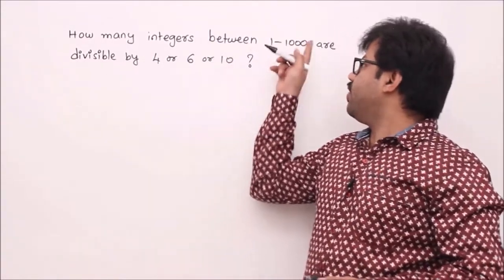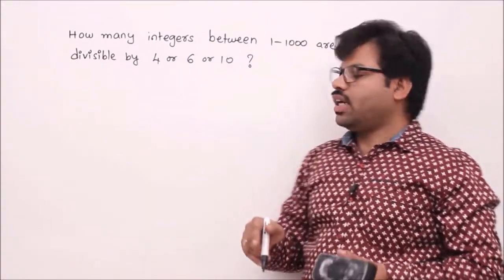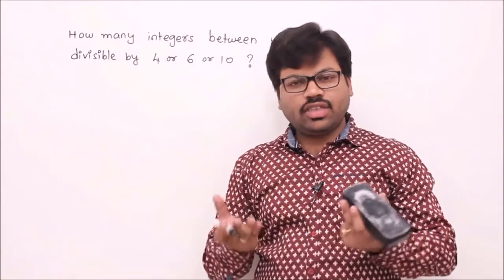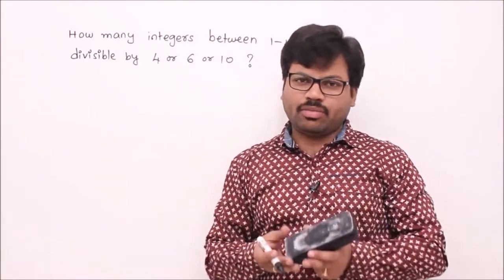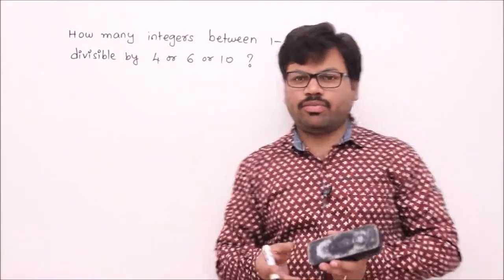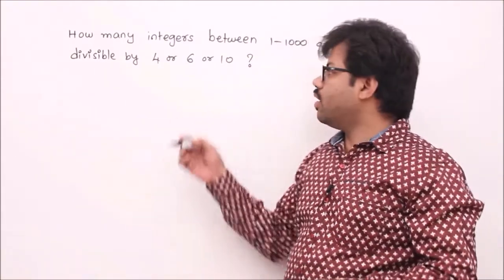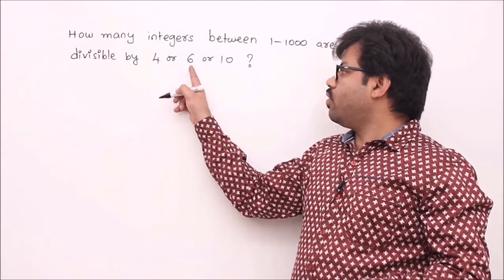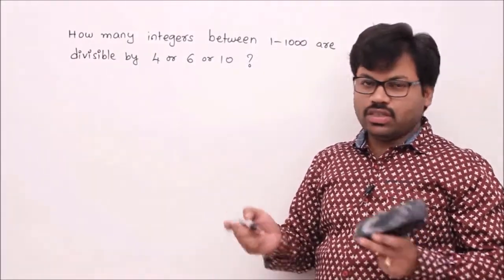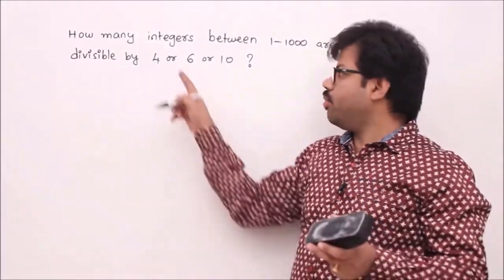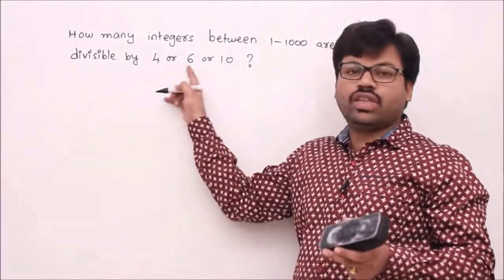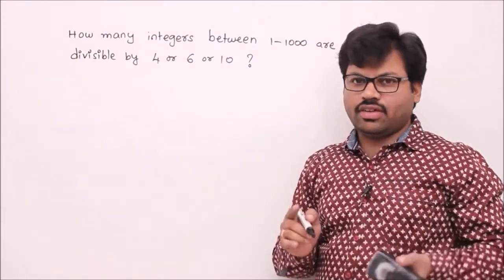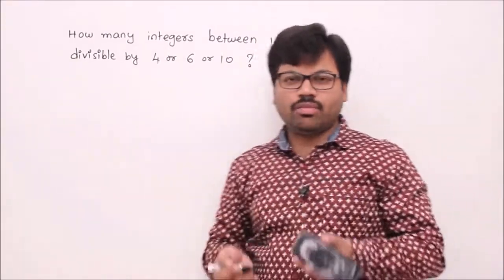Next problem: how many integers between 1 and 1000 are divisible by 4, 6, or 10? The difference from the previous problem is that 4, 6, and 10 are not prime numbers. The approach is the same — using inclusion-exclusion — but when computing intersections, we can't simply multiply; we need the LCM.